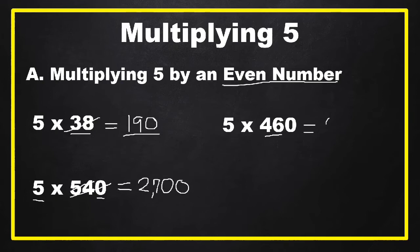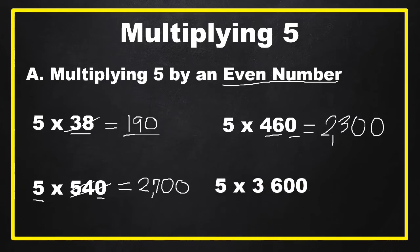Another example: five times 460. Get one half of 46, which is 23. Then copy a zero at the right side, then another zero because we multiplied by five. Our answer is 2,300.